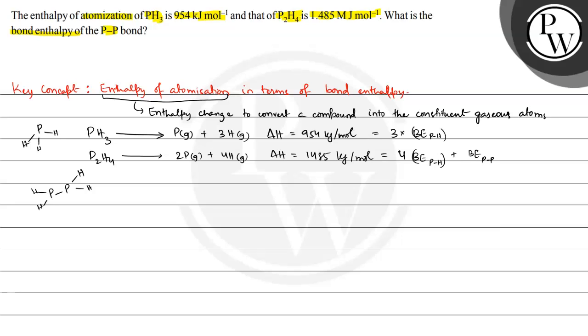Now, this value is equal to 3 multiplied by the bond energy of P-H. Bond energy of P single bond H would be 954 divided by 3 that is equal to 318 kilo joule per mole.